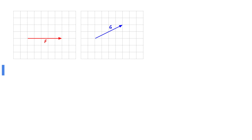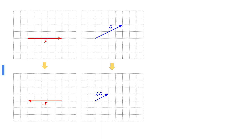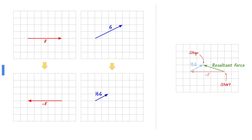Here is force F and G. When F is reversed, the direction of the arrow points in the opposite direction but the size remains the same. When G is halved, the size of the arrow halves but the direction remains the same. Add these two forces and join a line from the beginning to the end to find the resultant force.